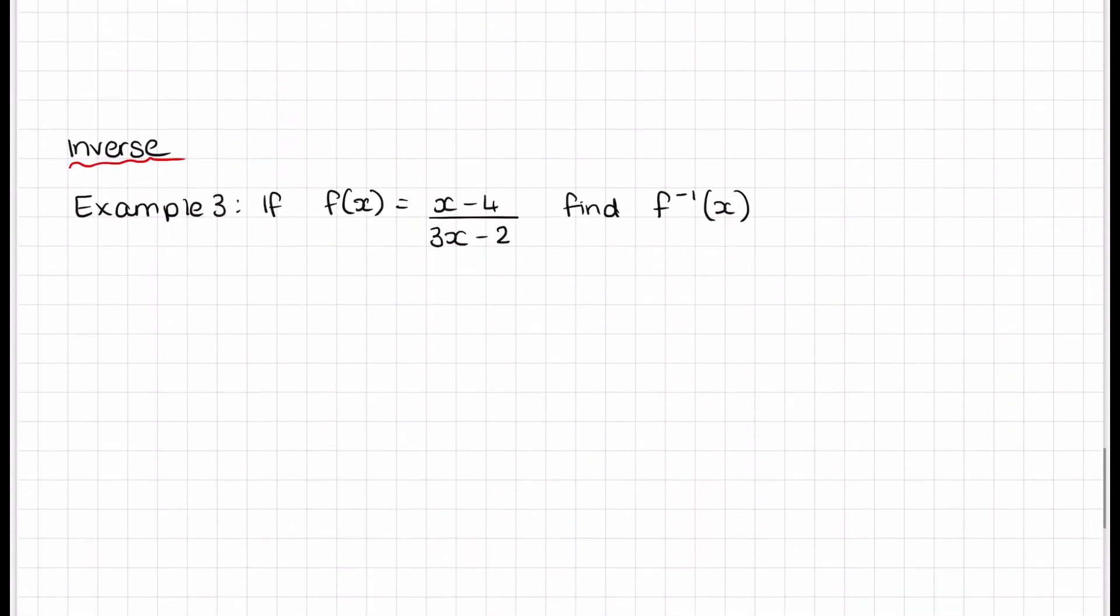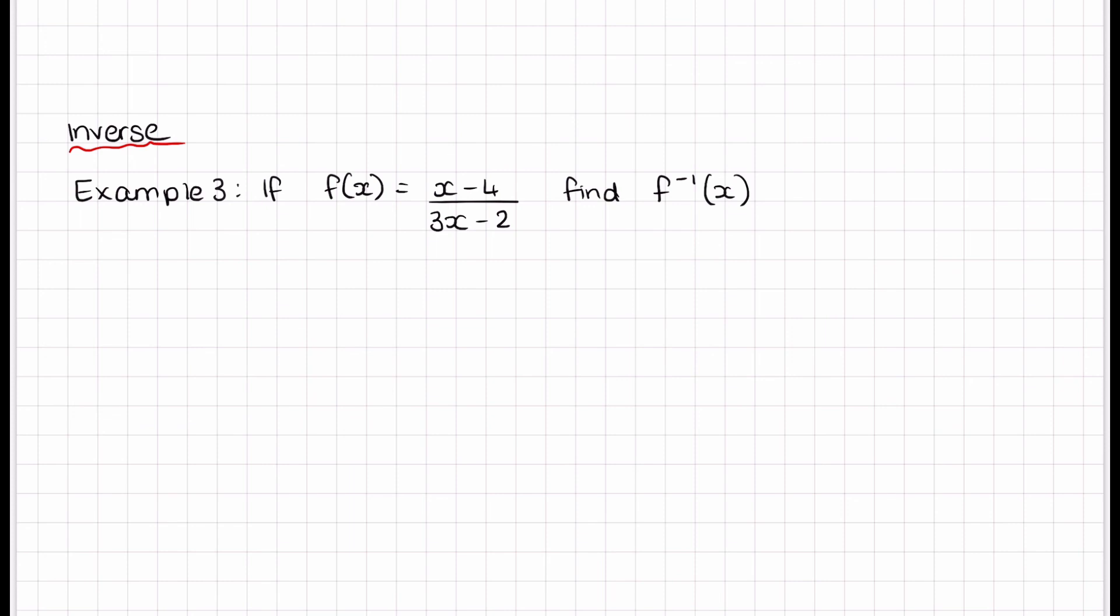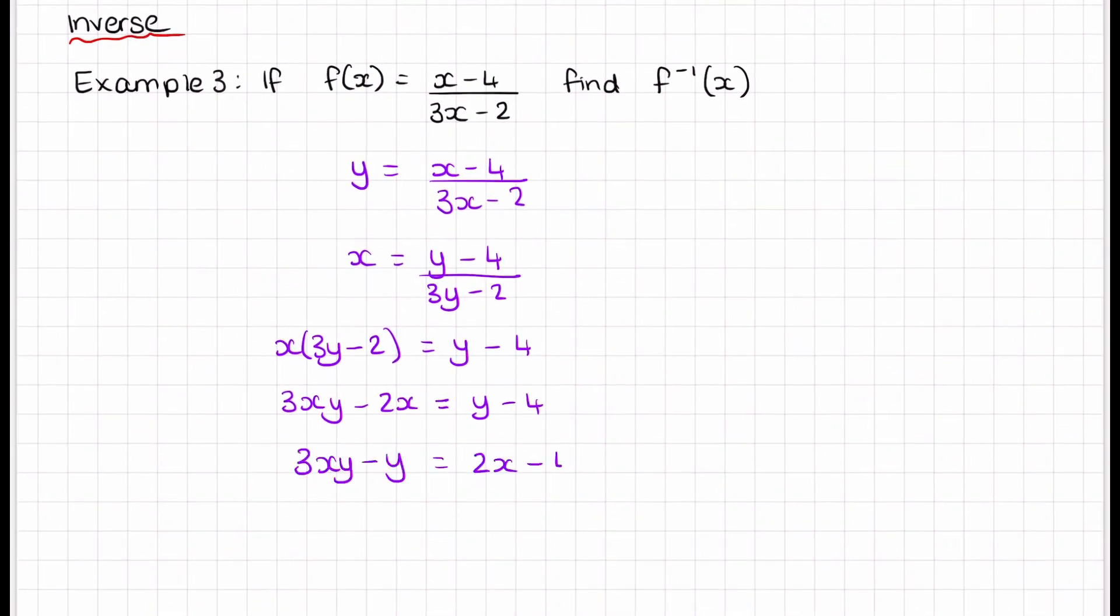We can also do the inverse of a rational function exactly the same as we would do the inverse with any type of function. First of all, write it y equals, then switch the x's and y's, and then solve from there. Expand your brackets, put all the y's on one side, all the x's on the other, factor out the y, and then divide. So we end up with our inverse as 2x minus 4 on 3x minus 1, and then write that with the correct notation. And that is rational functions.